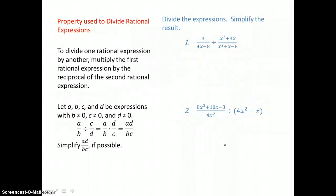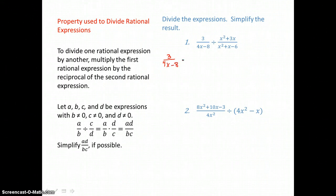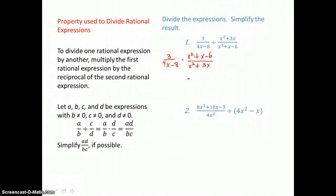Now we're going to divide rational expressions. Rational expressions are fractions, and we don't divide fractions — we multiply by the reciprocal instead. So in the first step, I'm going to invert that second fraction and multiply it to the first. Now, before we multiply across with all of these polynomials top and bottom, we want to factor and look for like factors top and bottom that we can cancel.